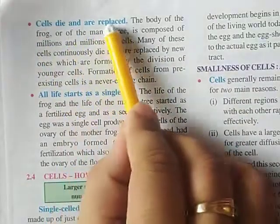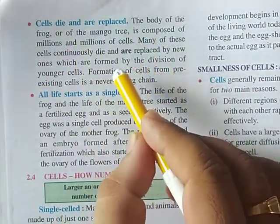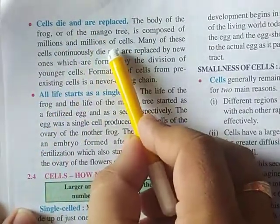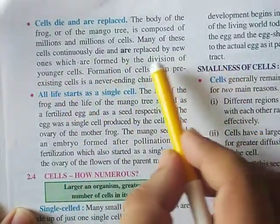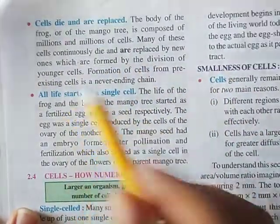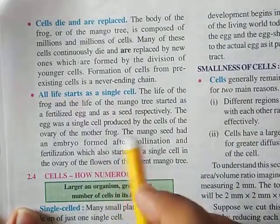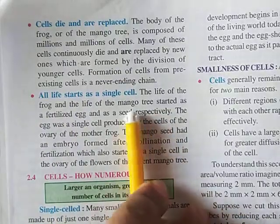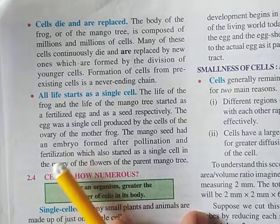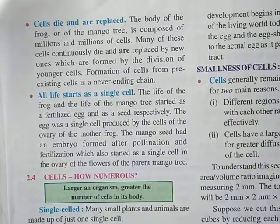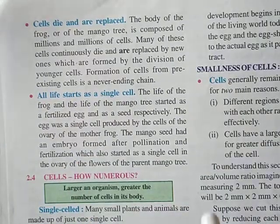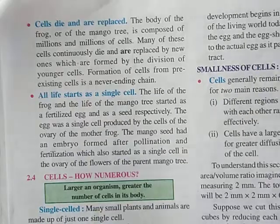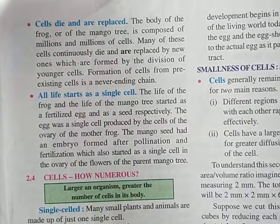Cells die and are replaced continuously. Frog and mango are composed of millions of cells, and those cells continuously die and are replaced by new cells — which is only possible by the process called cell division. All life starts with a single cell. Any single life is made by the fusion of a sperm and an egg cell, forming a zygote. From the zygote, an embryo is formed, and from the embryo the rest of the body is formed. Every life starts with a single cell — the zygote.